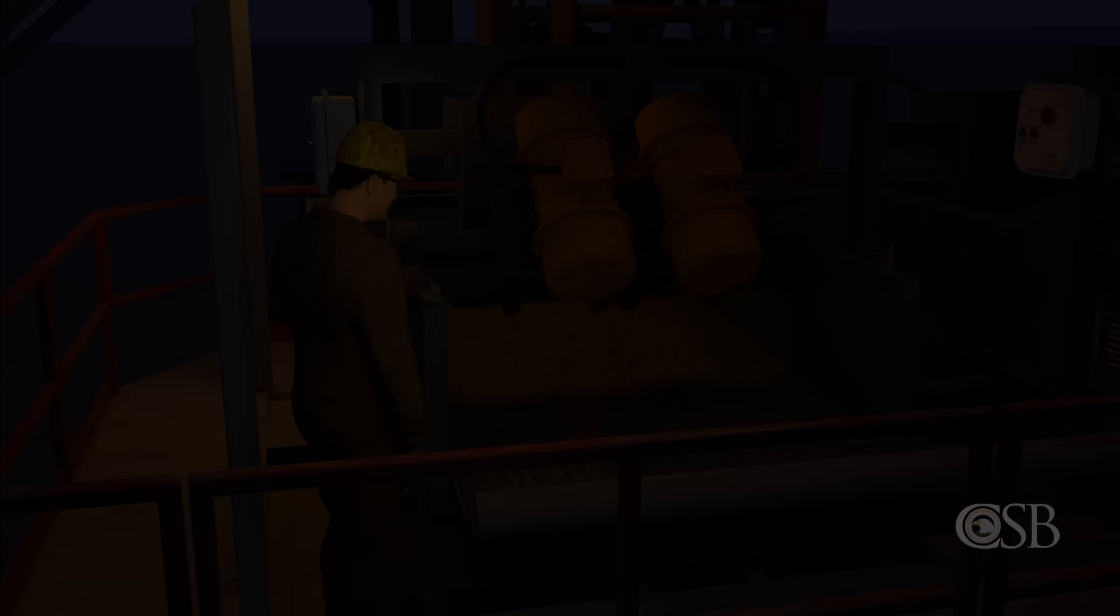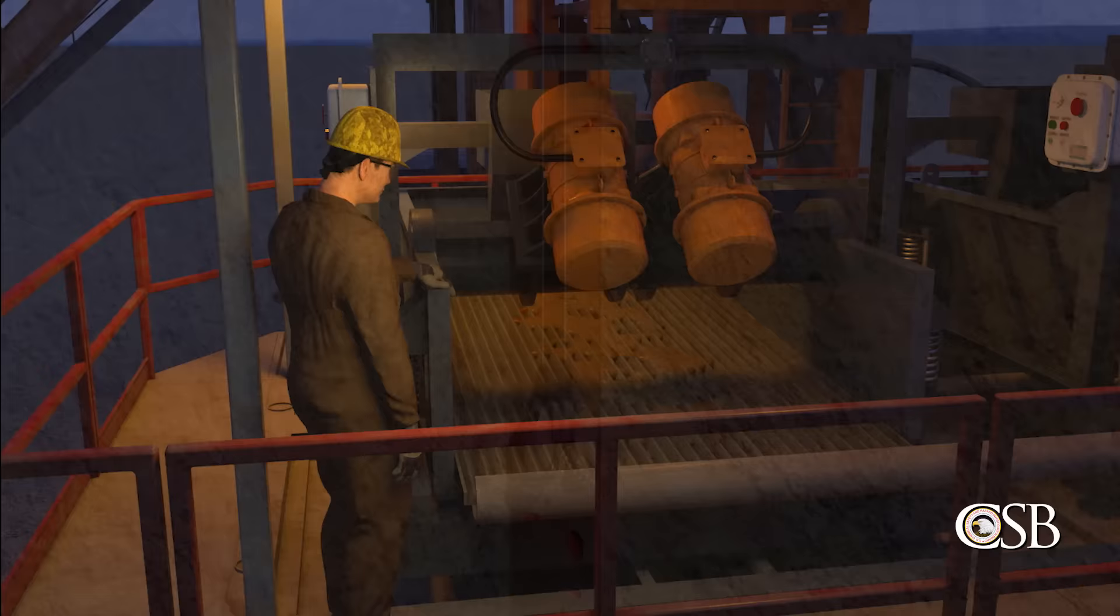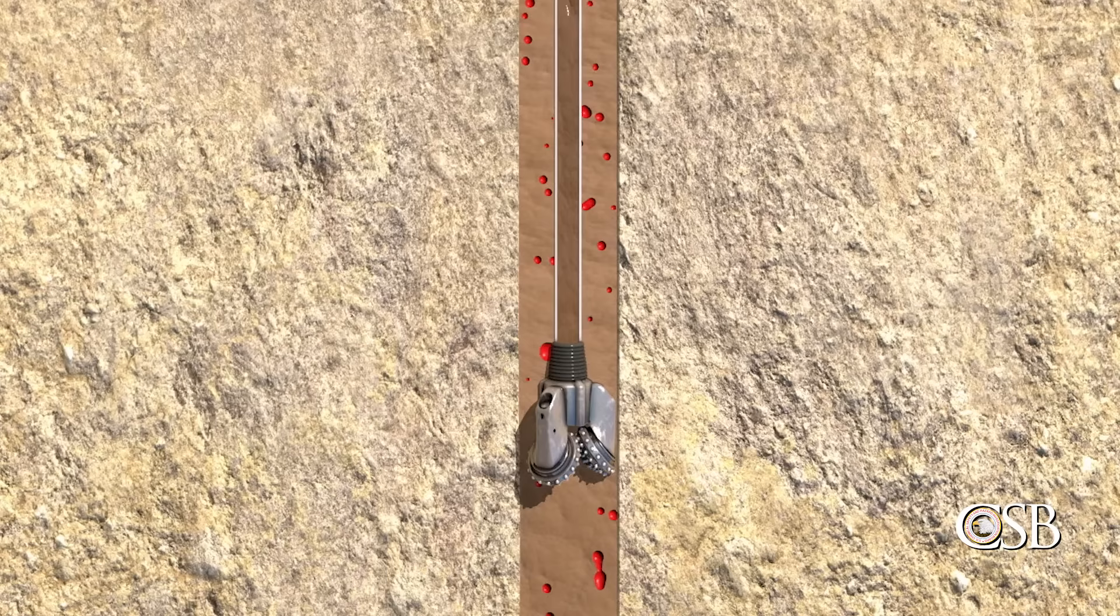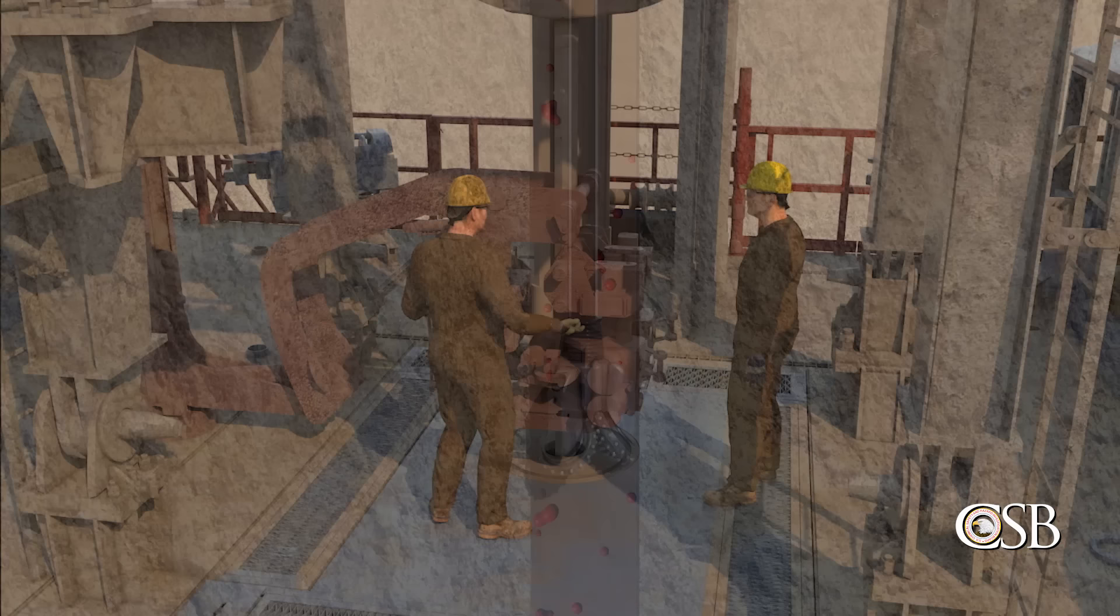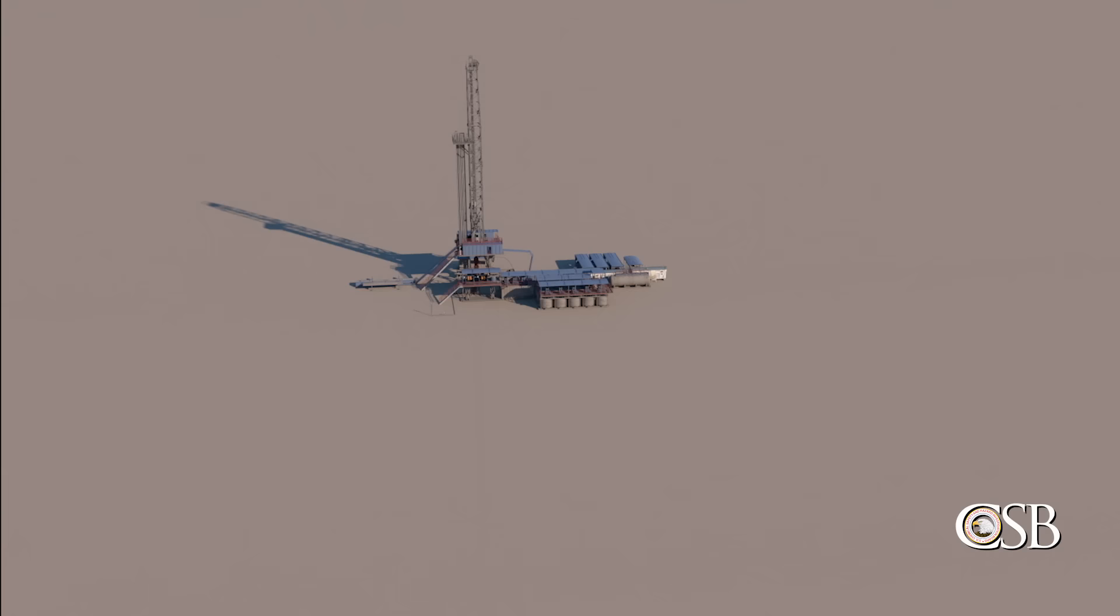Flow checks are a safety-critical operation used to determine if gas or other formation fluids have entered a well, which could lead to a blowout. Patterson policies required flow checks to be performed at various times during the tripping operation. But the CSB found that of the 27 flow checks that were required by Patterson during the drilling of this well and the previous well, only two were performed and those were inadequate. There was a culture on this rig that accepted the non-performance of flow checks. Performing flow checks during the tripping operation, as required by Patterson, could have identified that the well was flowing and could have prevented the blowout.